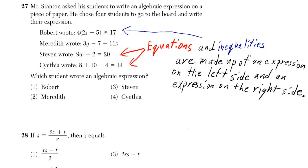Stephen and Cynthia wrote equations. Robert wrote an inequality, and both equations and inequalities are made up of an expression on the left side and an expression on the right side.